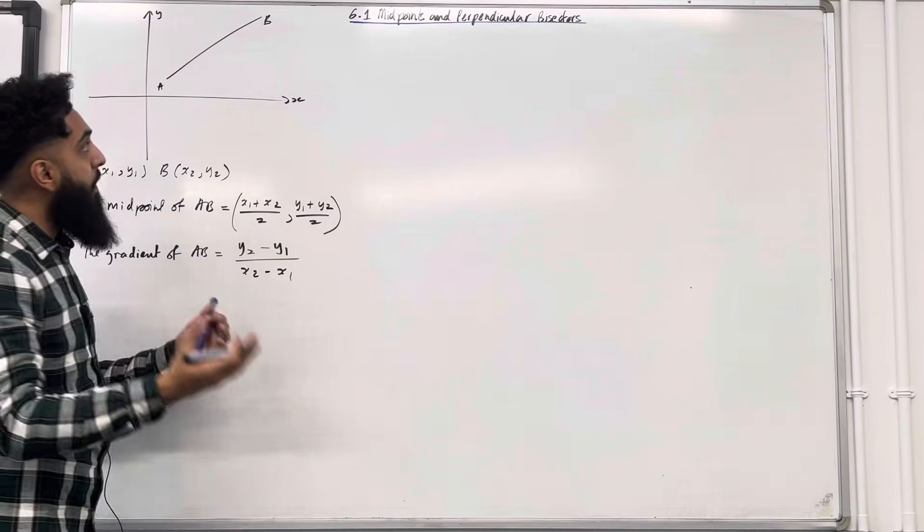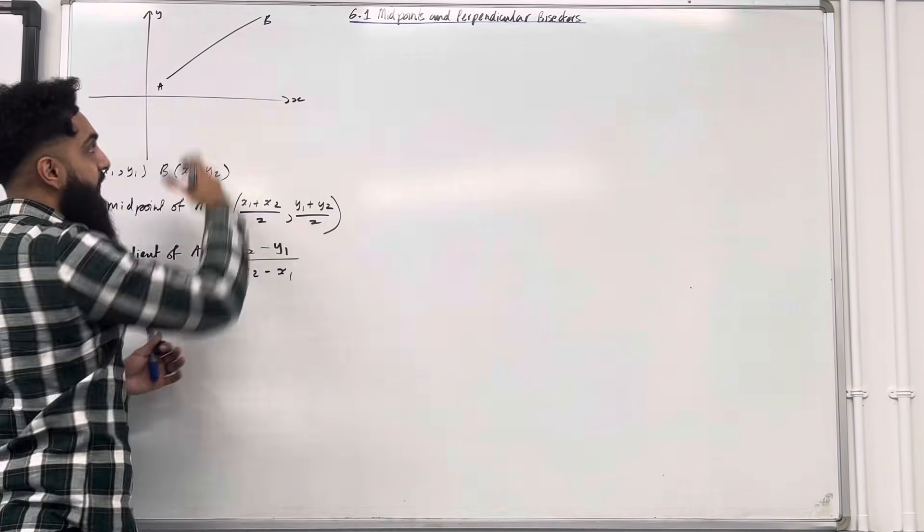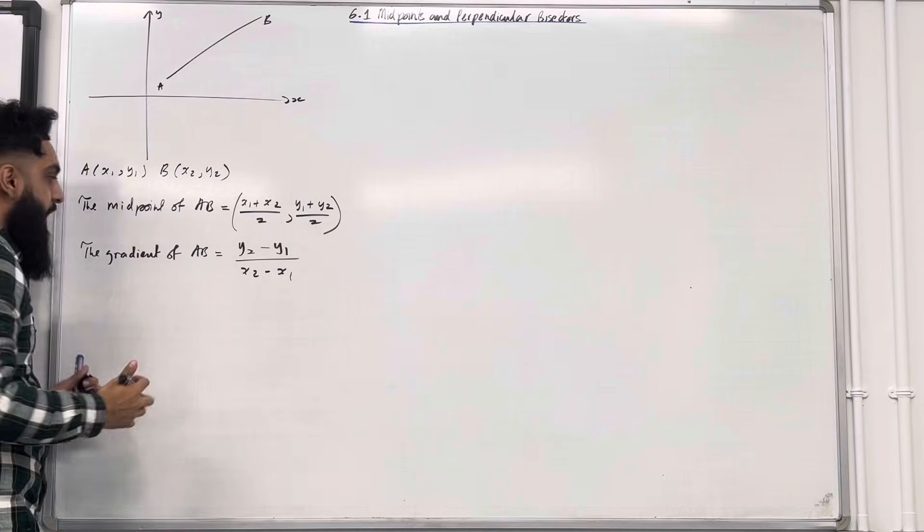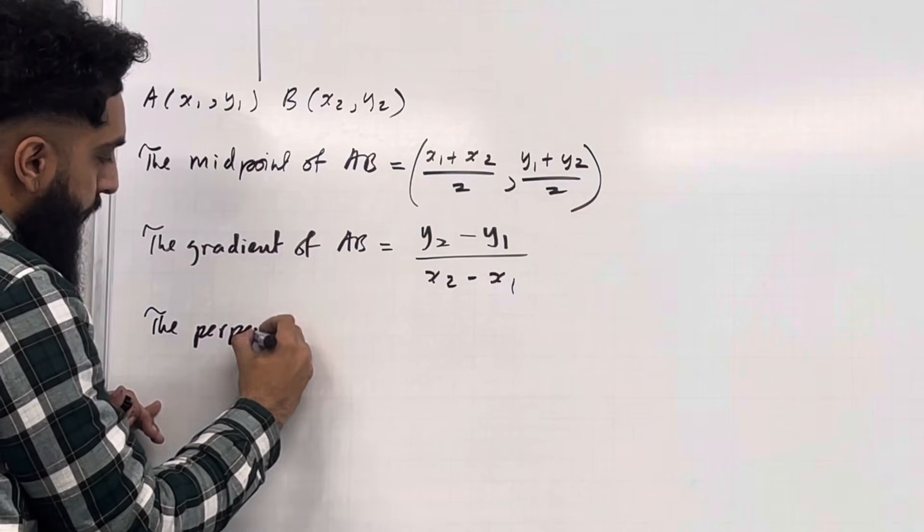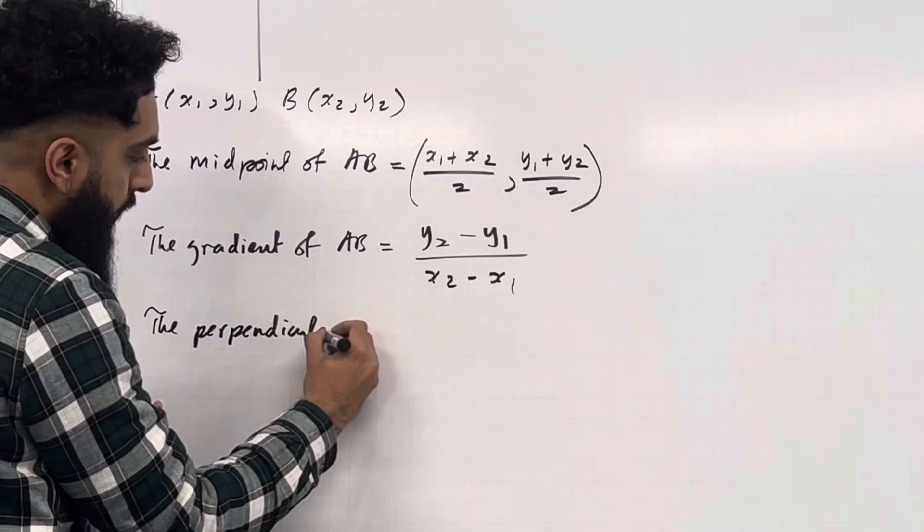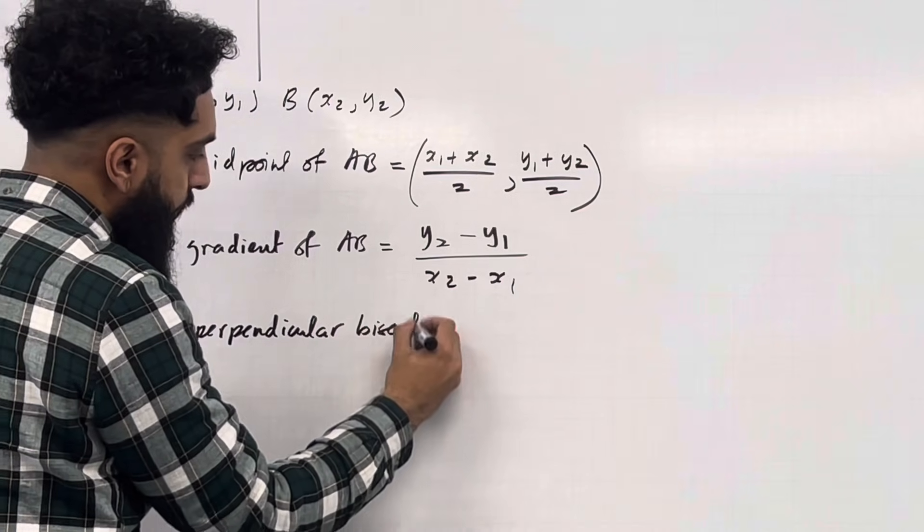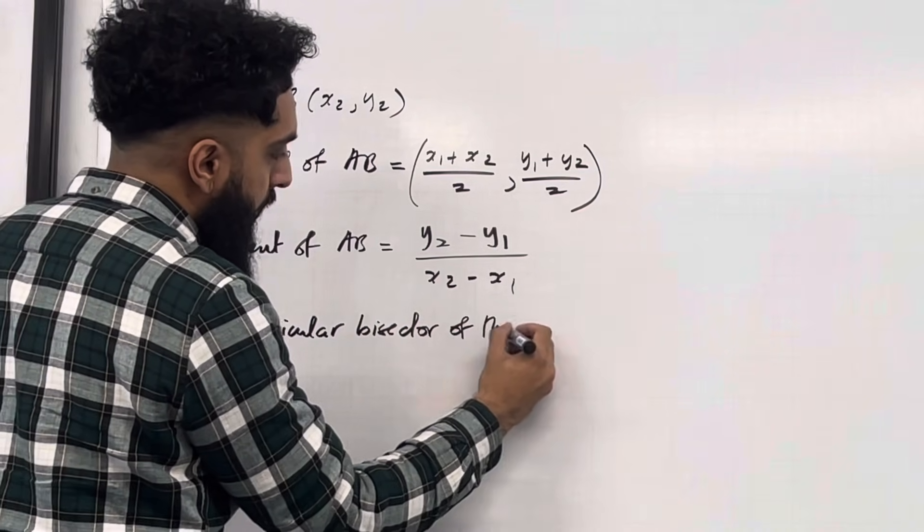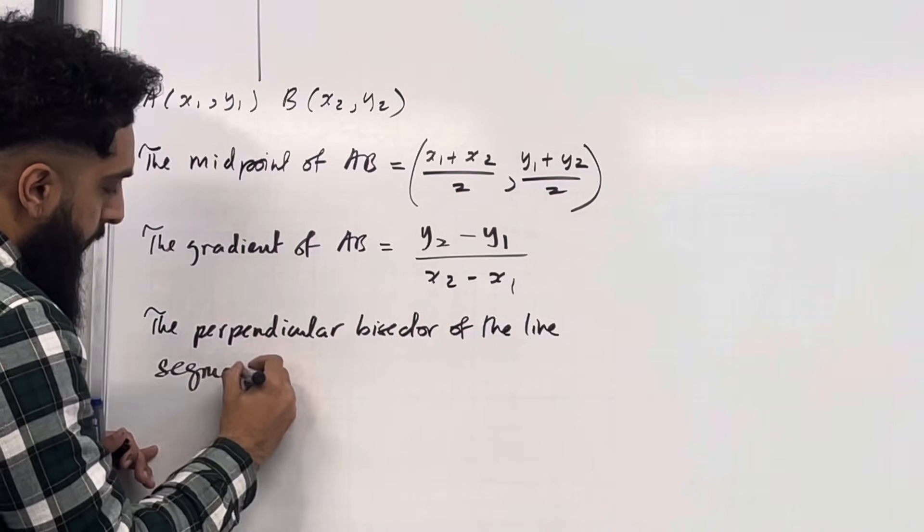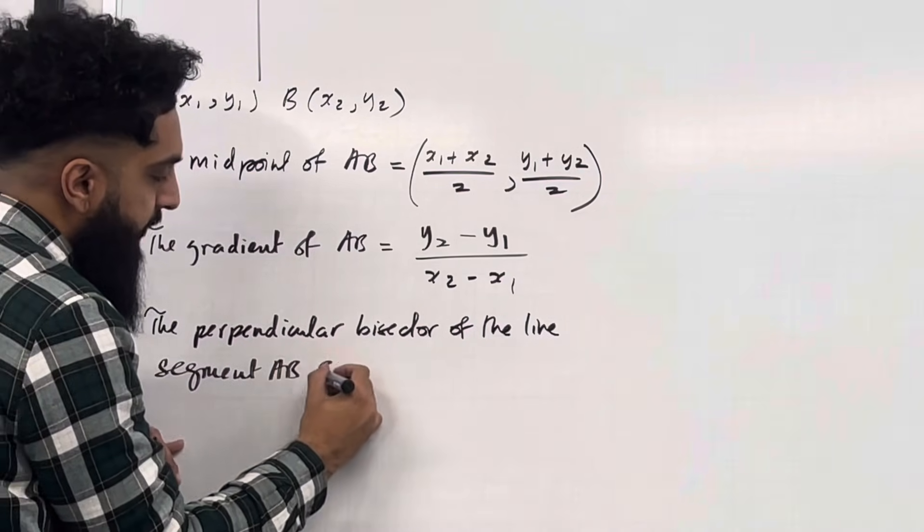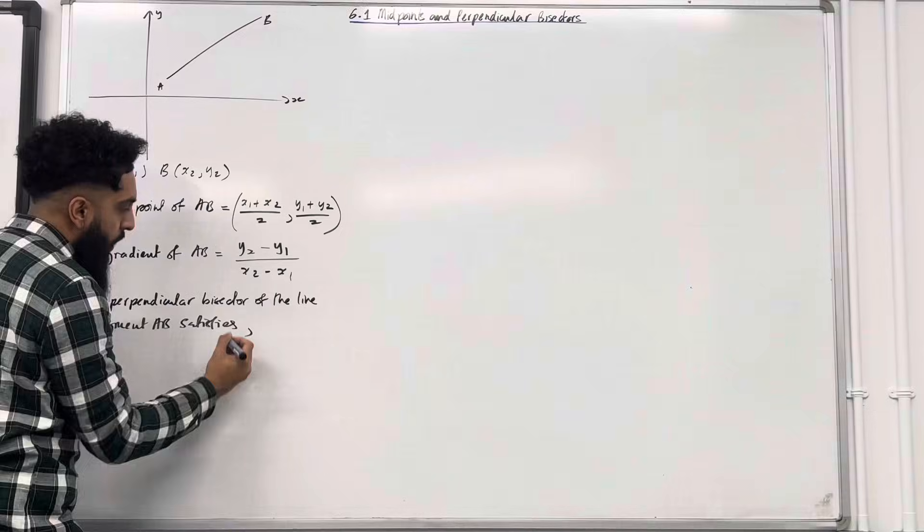Now I'm going to define the perpendicular bisector of the line segment A to B. Let's have a look at the definition. The perpendicular bisector of the line segment A to B satisfies the following two conditions.